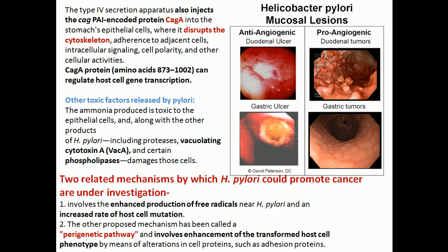The Type 4 Secretion System also injects the CagA pathogenicity island protein — CagA — into the stomach's epithelial cell, which disrupts the cytoskeleton. This relates to cytoskeleton remodeling and apoptosis inhibitory molecules. If it triggers these pathways, it may cause cancer. The CagA protein can also regulate host cell gene transcription. In the terminal stage of infection, damaging conditions include gastric ulcer at the basic stage, potentially progressing to gastric tumors — a very dangerous, cancerous condition.